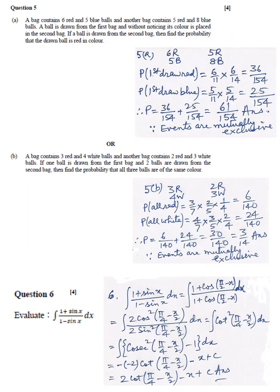Question 5A: Answer 61 upon 154. Question 5B: Answer 3 upon 14. Question 6: Answer 2 cot pi upon 4 minus X upon 2 minus X plus C.